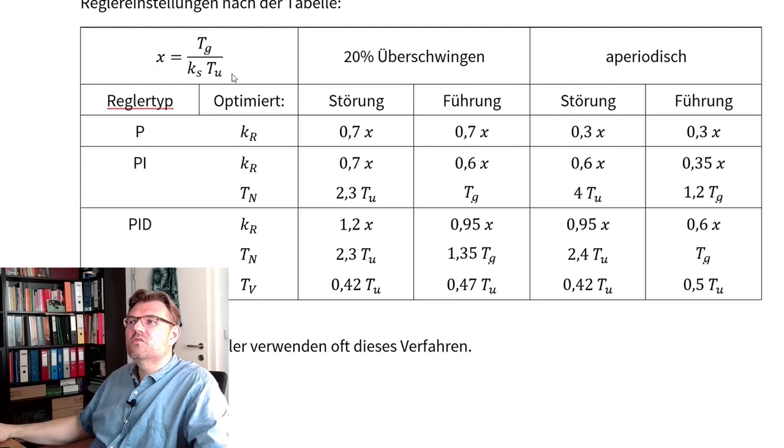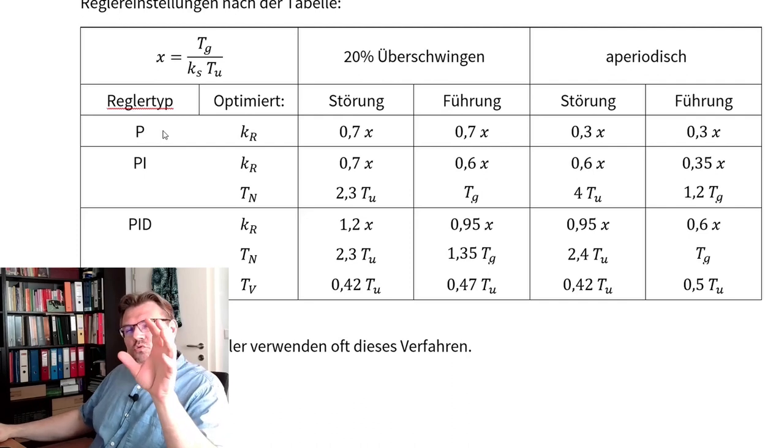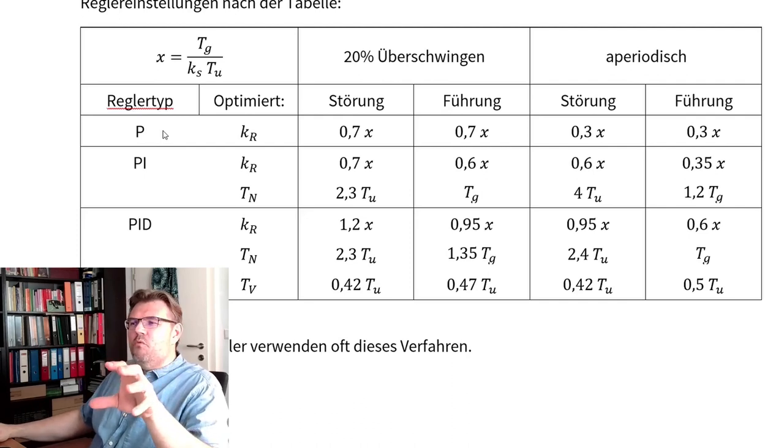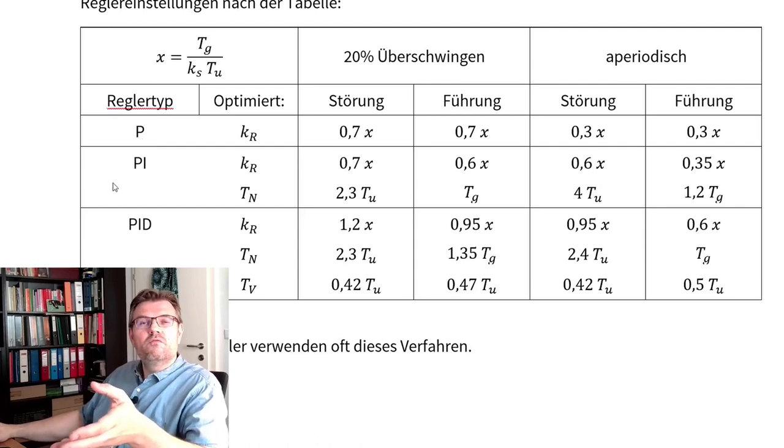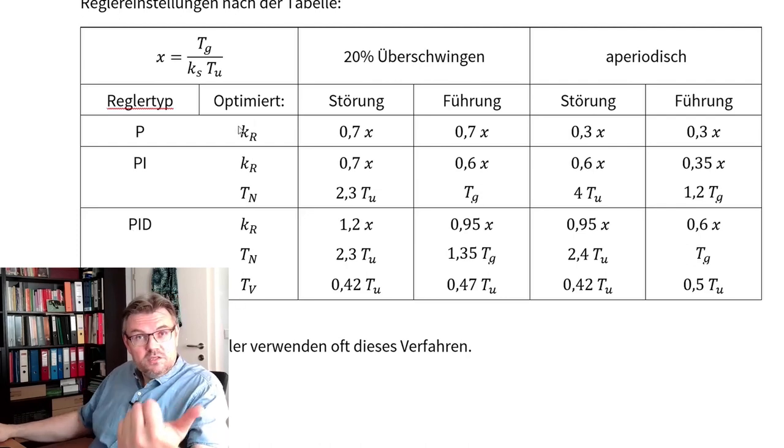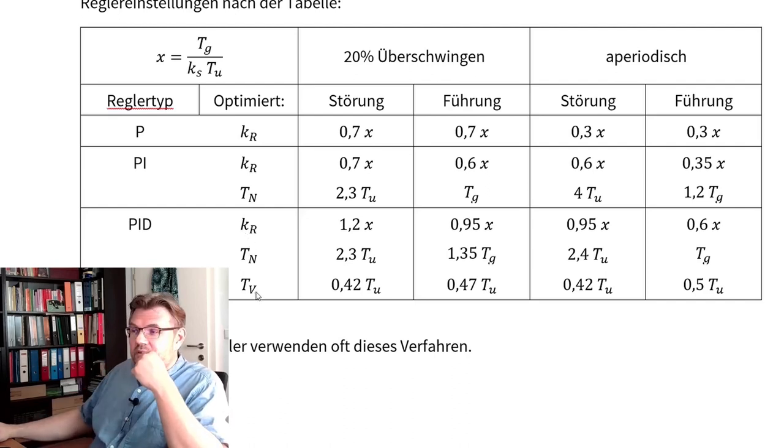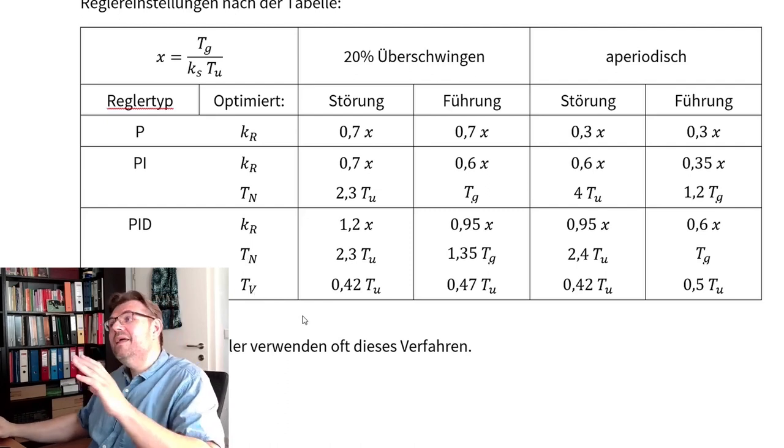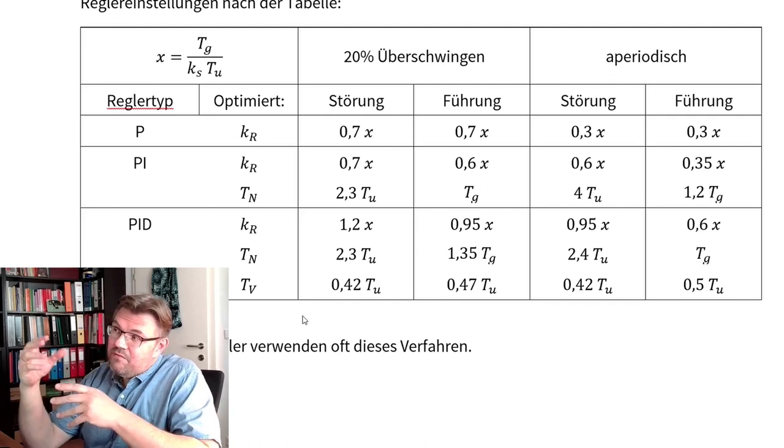And then we differ between the type of controller used. So there are a set of parameters for a P controller, for a PI controller and a PID controller. For the P controller, it's just the proportional gain. For the PI controller, it's proportional gain and the integration time. And for the PID controller, also the derivation time is there.